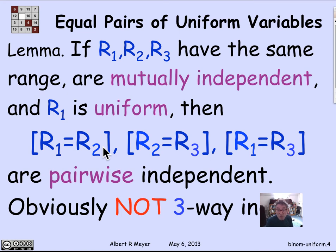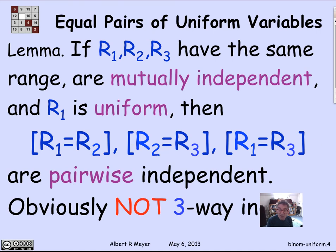They're obviously not three-way independent — and three-way independence is what mutually independent means. Because if I know that R1 equals R2, and I know that R2 equals R3, it follows that R1 equals R3. So given those two events, the probability of the third changes dramatically to certainty.